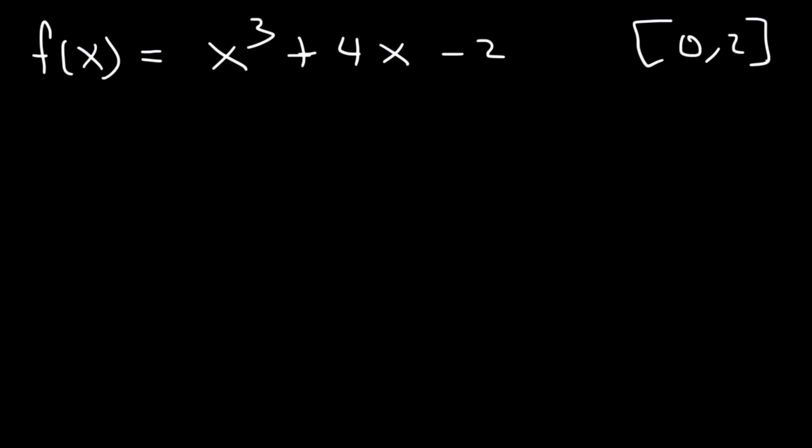So first, we need to find the value of f of a and f of b. In this case, f of zero and f of two. a is zero, b is two.